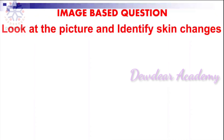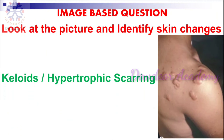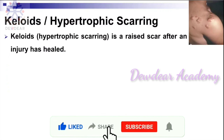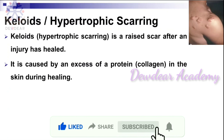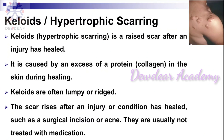Next question: look at the picture and identify the skin changes. The answer is keloids, or hypertrophic scarring. It is a raised scar after an injury has healed, caused by an excess of a protein called collagen in the skin during healing. Keloids are often lumpy or ridged; the scar rises after an injury or condition has healed, such as a surgical incision or acne. This is mainly caused by excess collagen in the skin while tissues are getting healed.